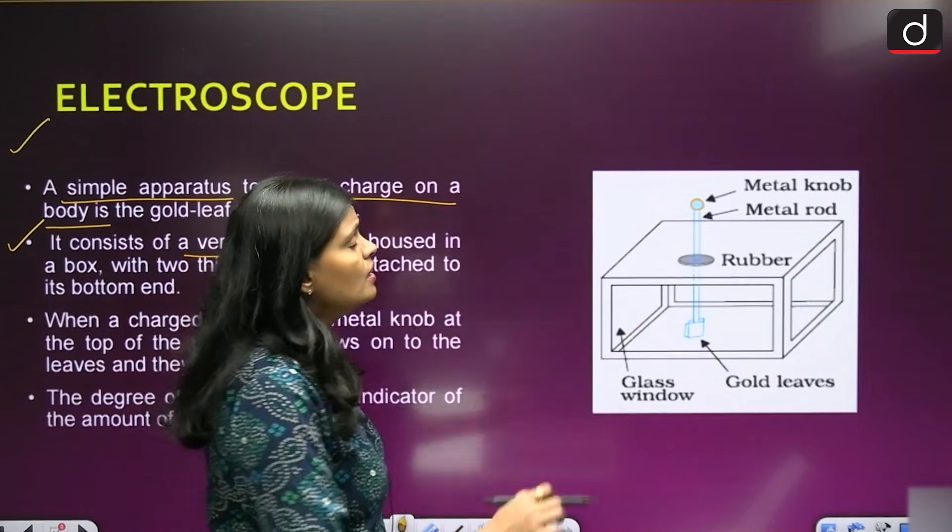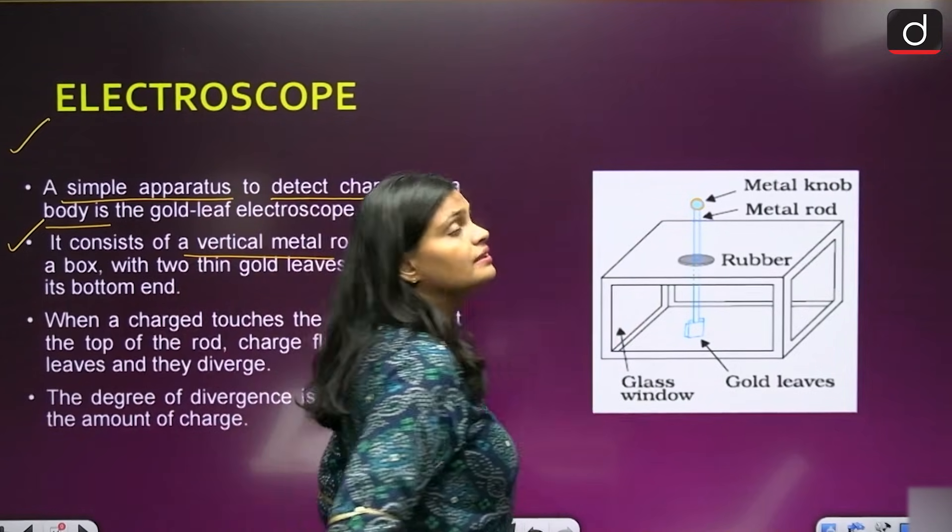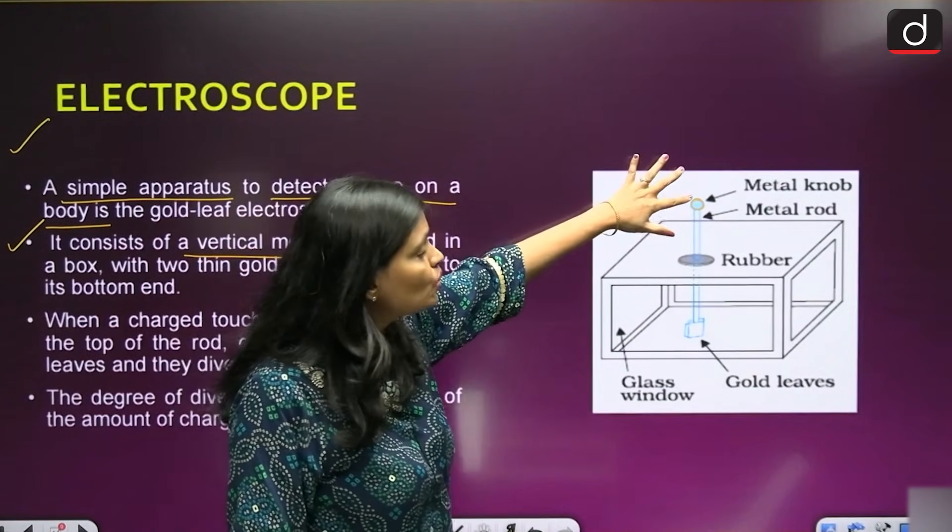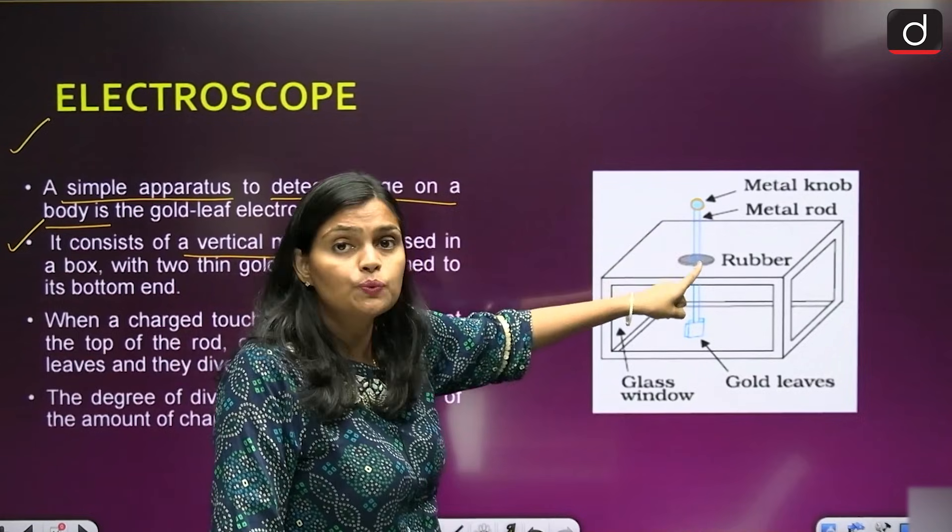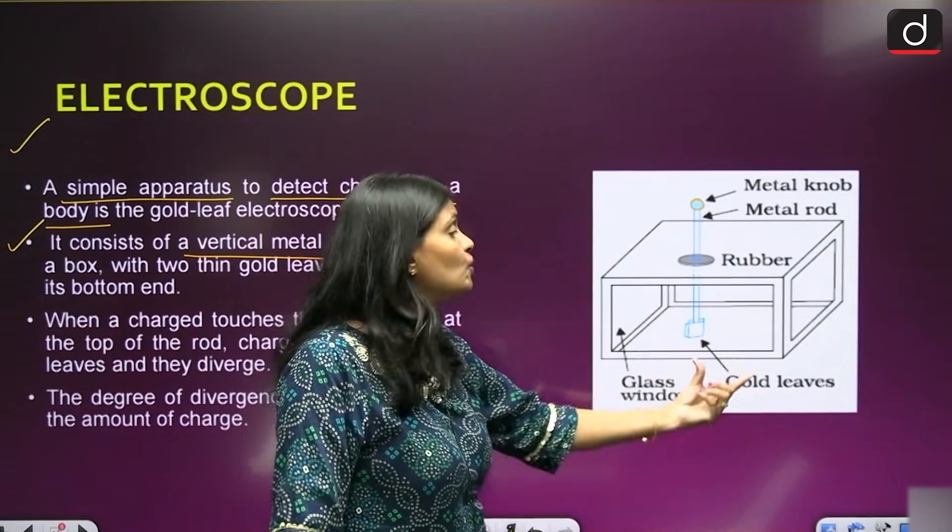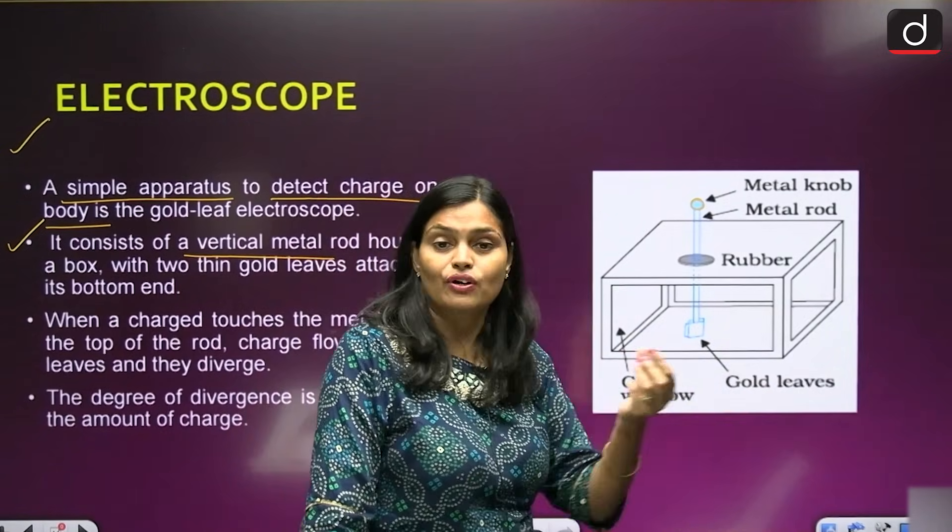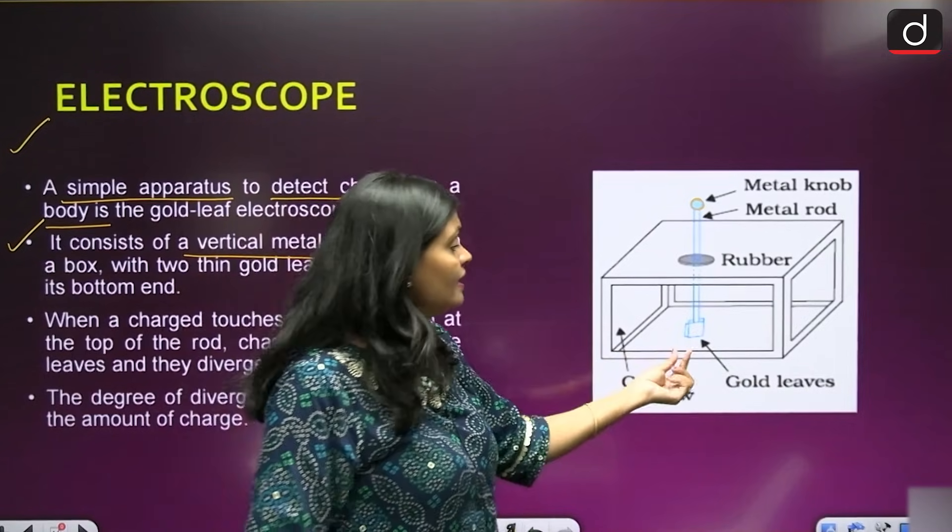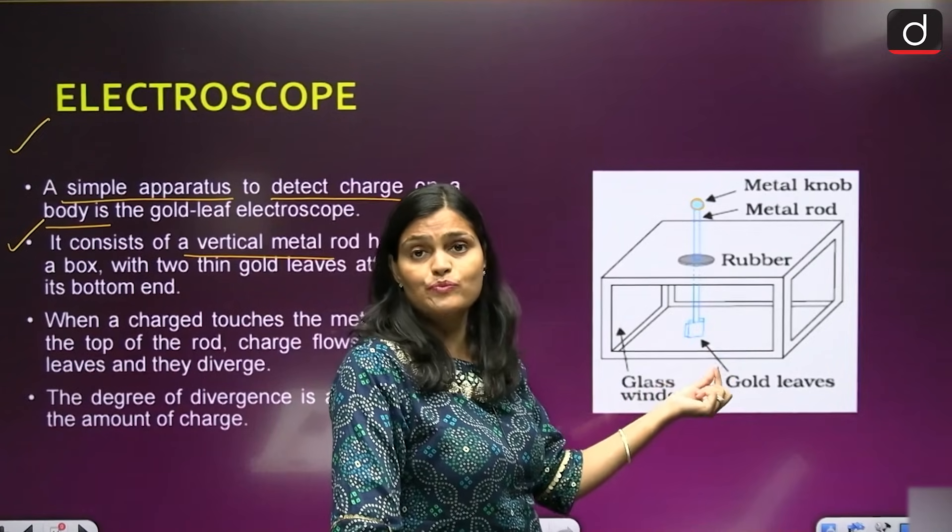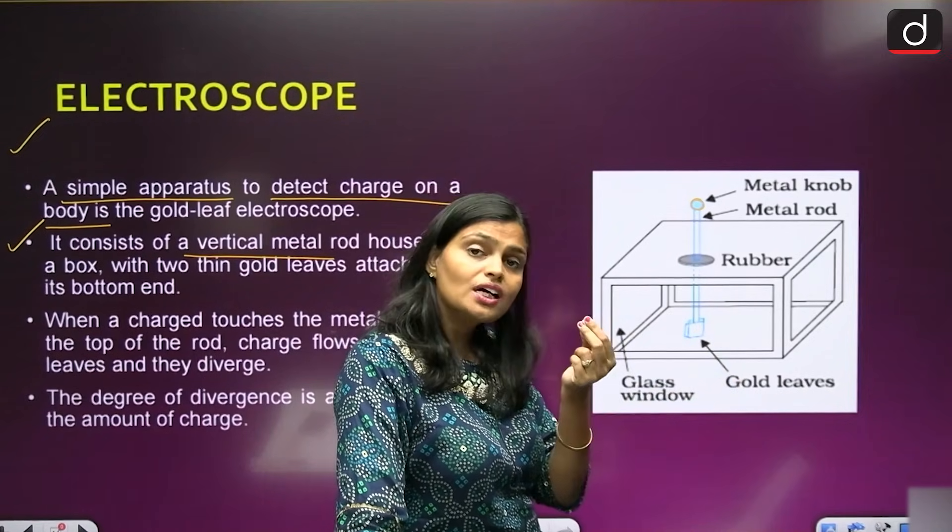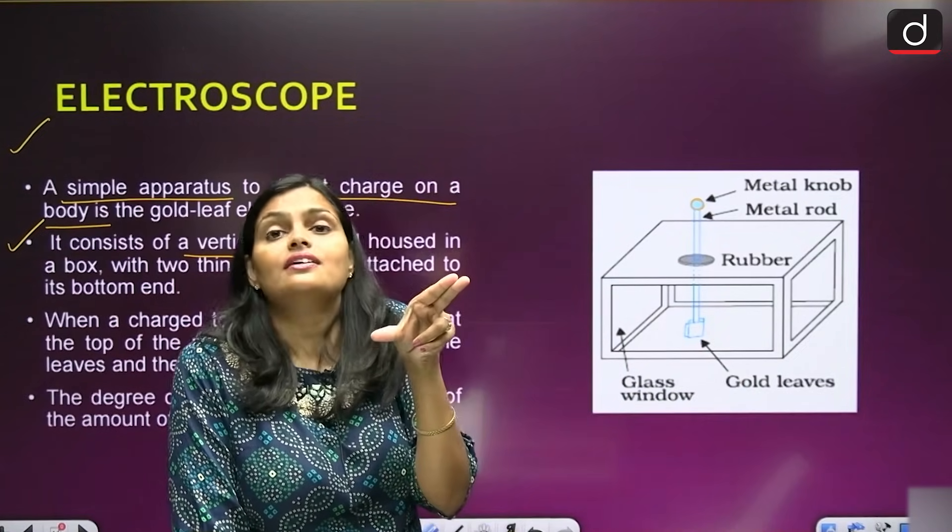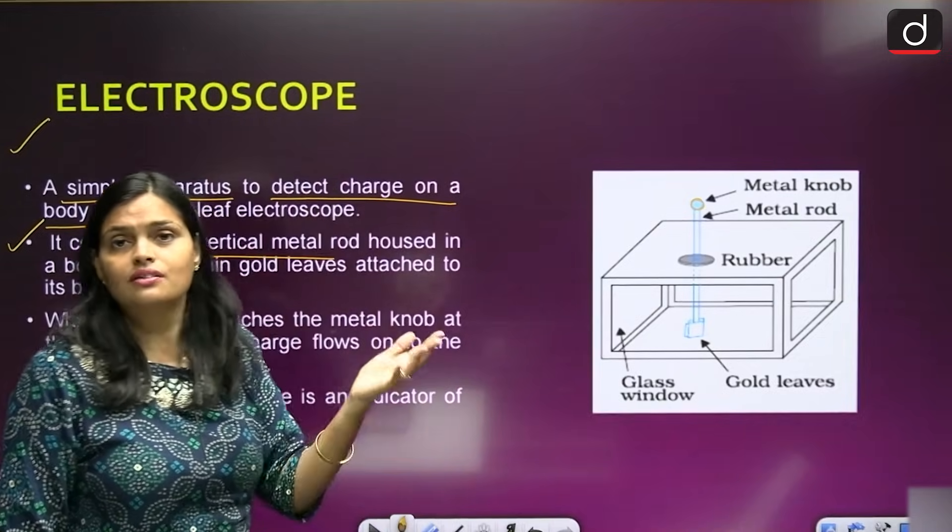When you bring the charged body near the rod, near this knob, from this knob the charges are transferred through the metal rod and reaches to the bottom where you have kept a gold leaf. Here is a gold leaf. Since the metal rod experiences the same charges, same charges repel each other. So you have seen that the gold leaf started separating with each other. This is all about the apparatus.